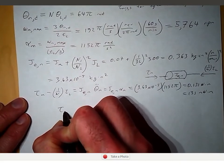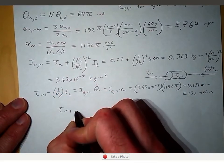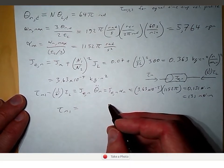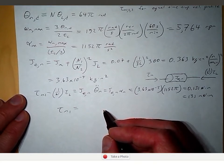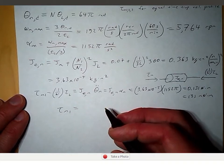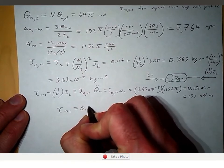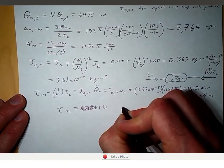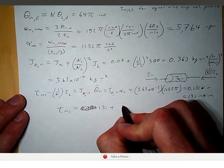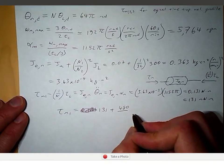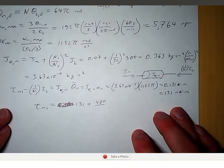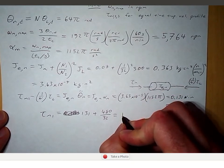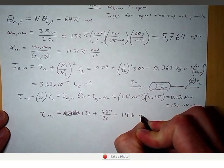Tau_M1, the motor torque in the first portion of the velocity profile during constant acceleration, is 131 millinewton-meters plus 480 millinewton-meters from tau_L divided by N of 32. So the torque required for this portion of the trajectory is 146 millinewton-meters.